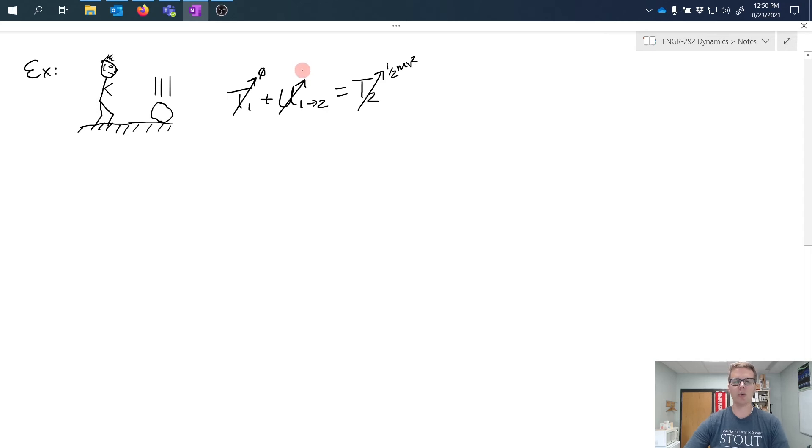So we can rewrite this equation then as mgh equals one half mv squared. Right away we note that there's an m, or mass, in both sides of the equation, so we can go ahead and cross those out because they will cancel each other out.